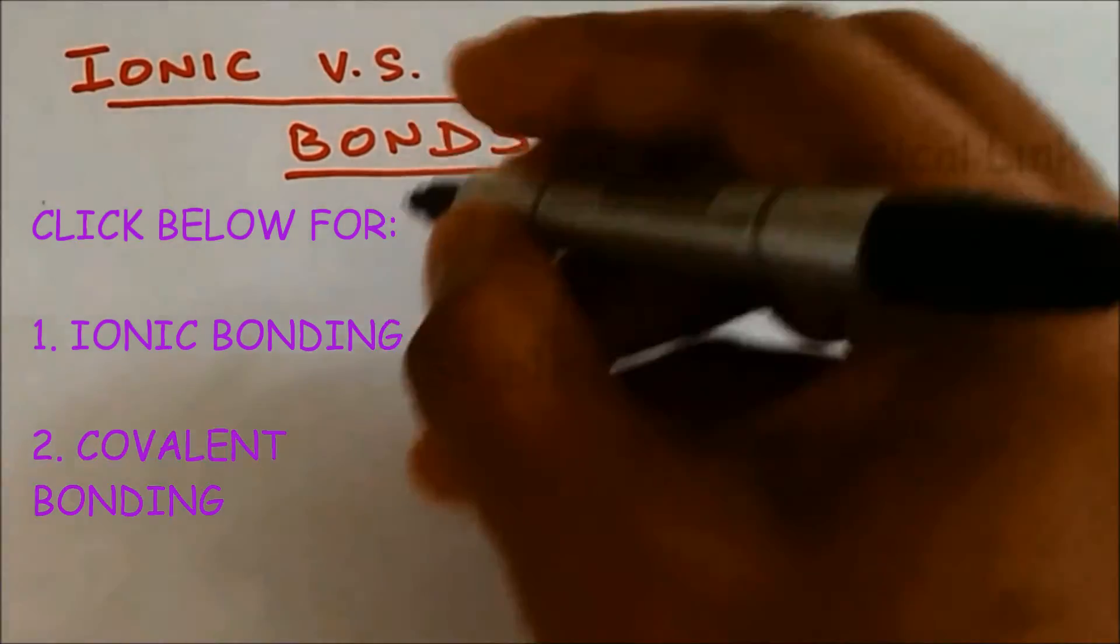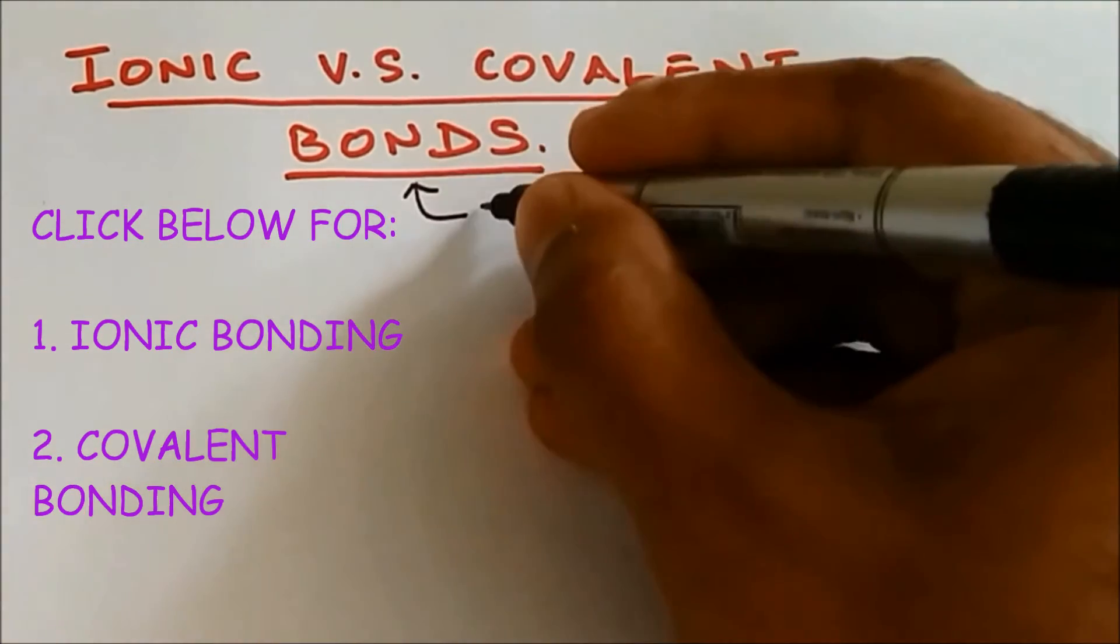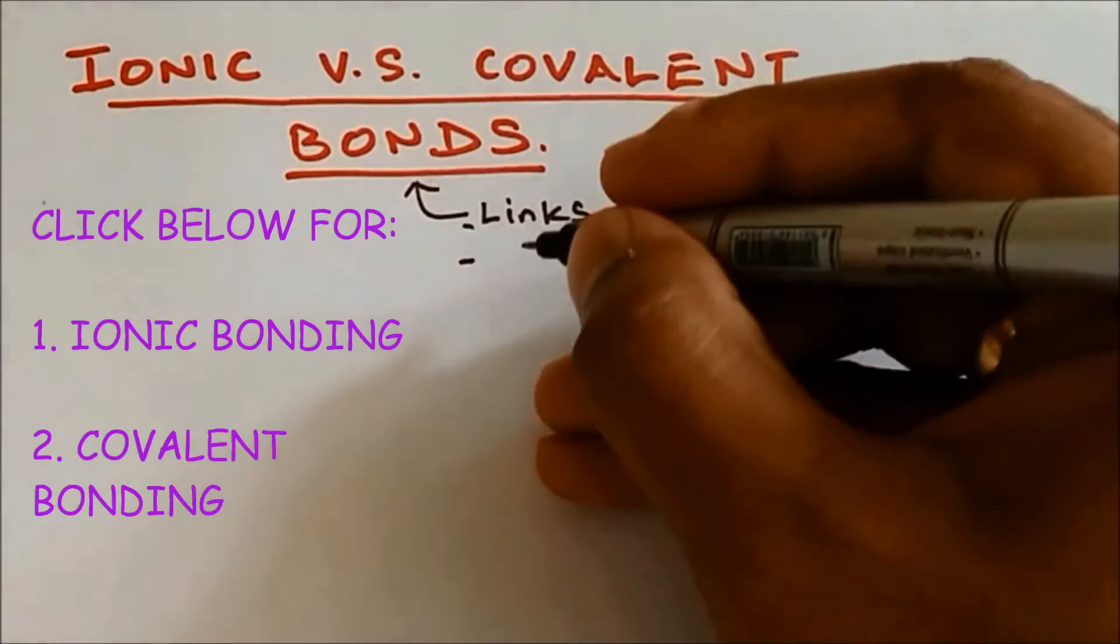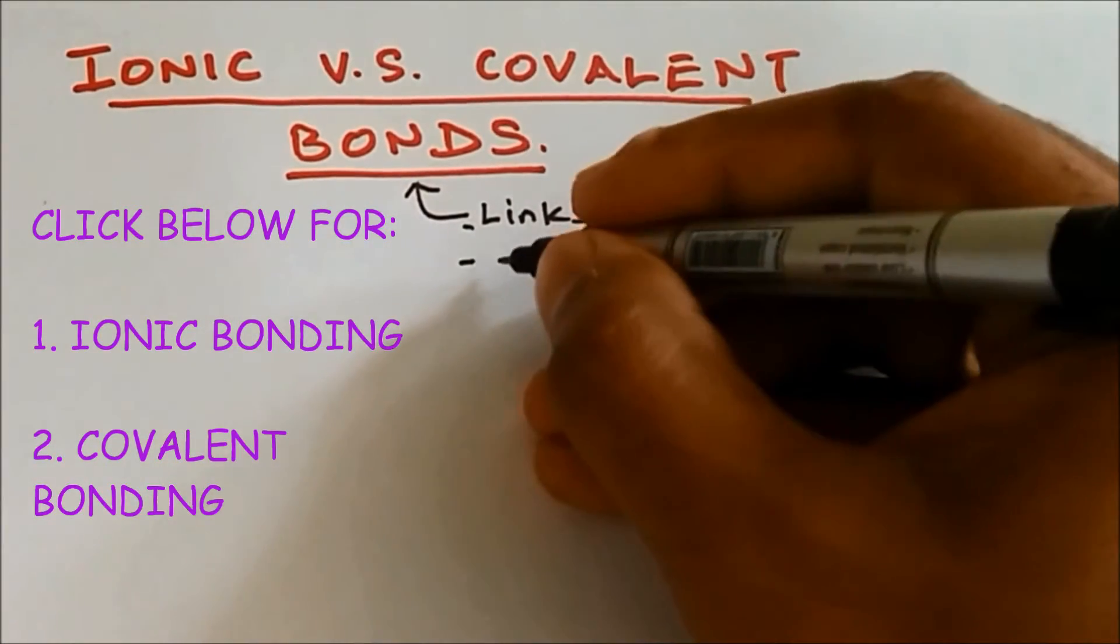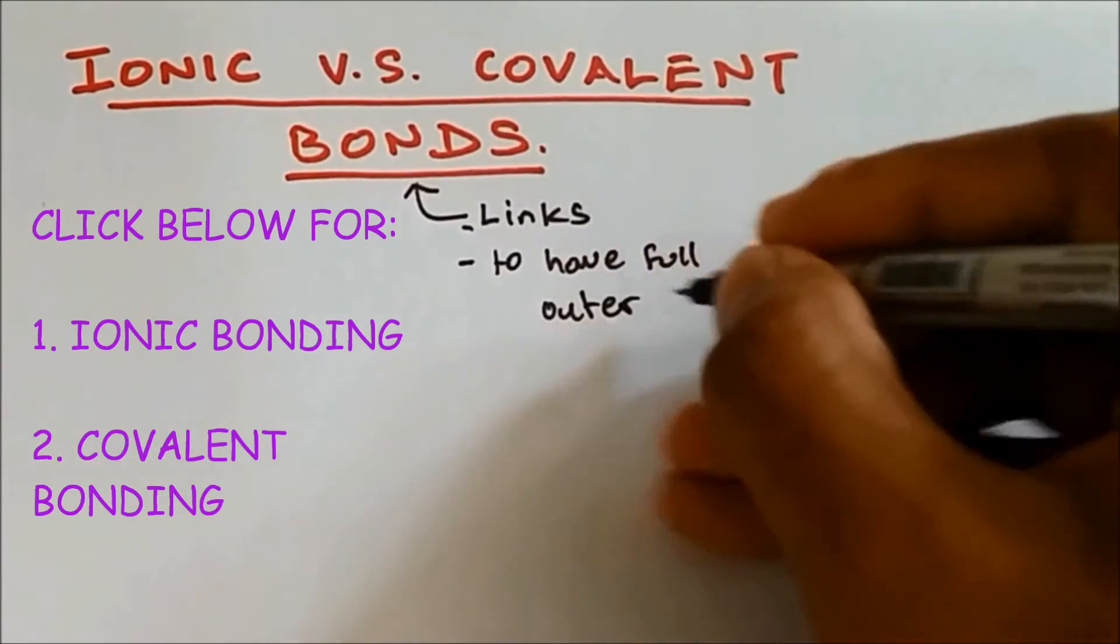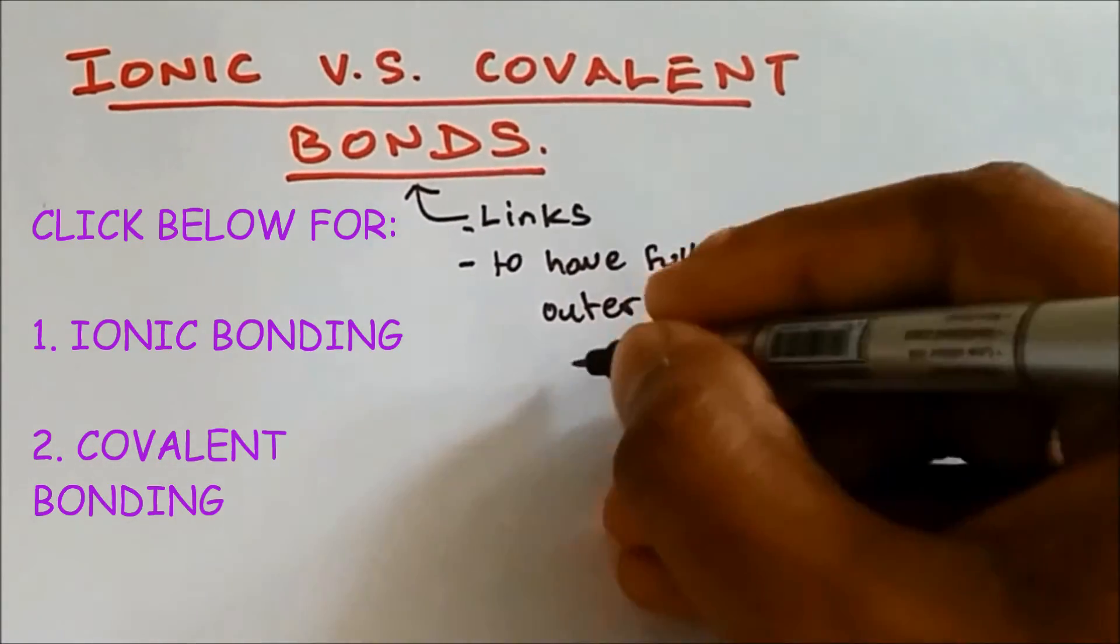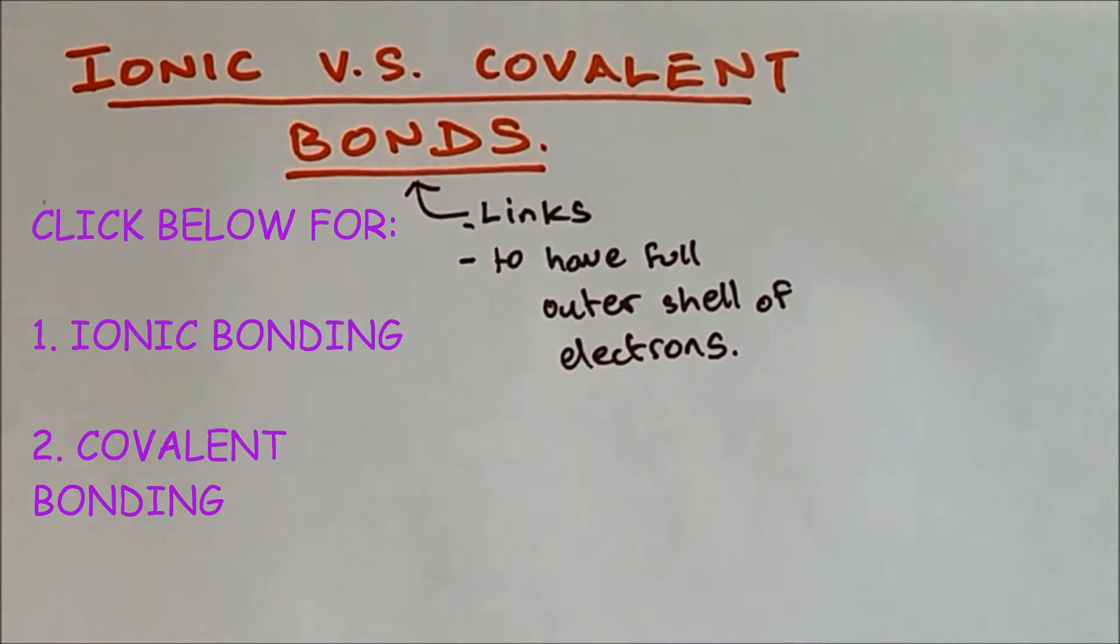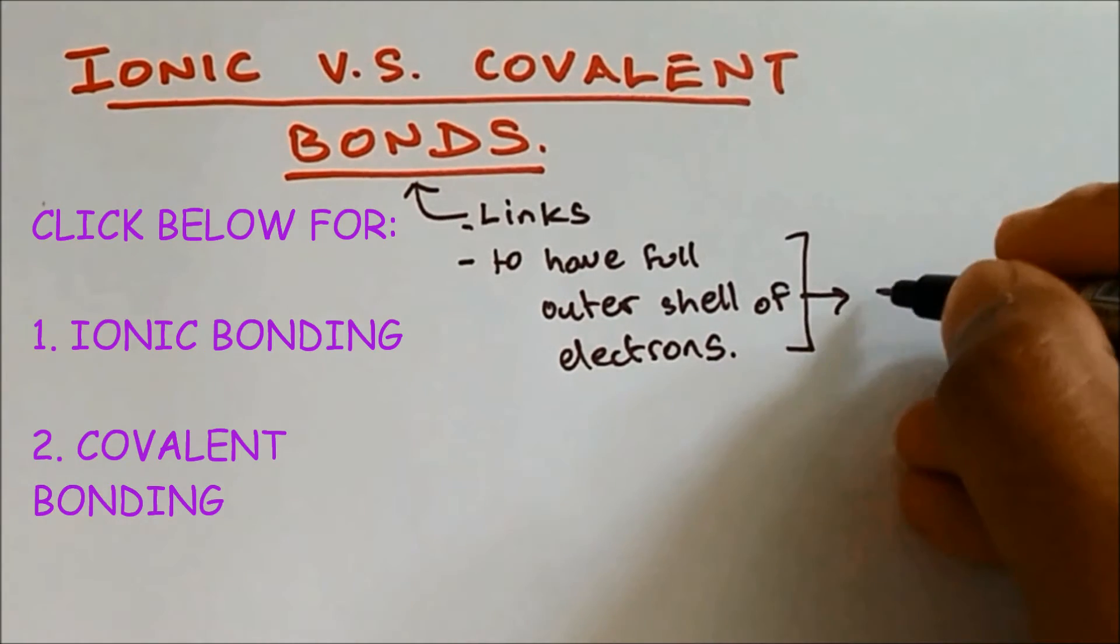When they have full outer shell of electrons they become more stable. So bonds mean links and atoms bond to have full outer shell of electrons. And this makes the atom to become more stable.